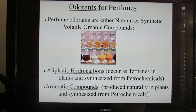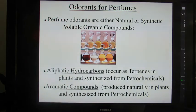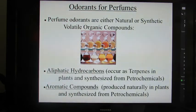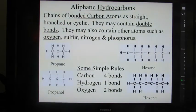Odorants for perfumes are of several natures. They're either natural or synthetic volatile organic compounds. They occur as aliphatic hydrocarbons, which in plants are terpenes and synthesized as terpenes in plants. We also get aliphatic hydrocarbons from petrochemicals. There are also aromatic hydrocarbon compounds, produced naturally in plants and synthesized from petrochemicals as well.